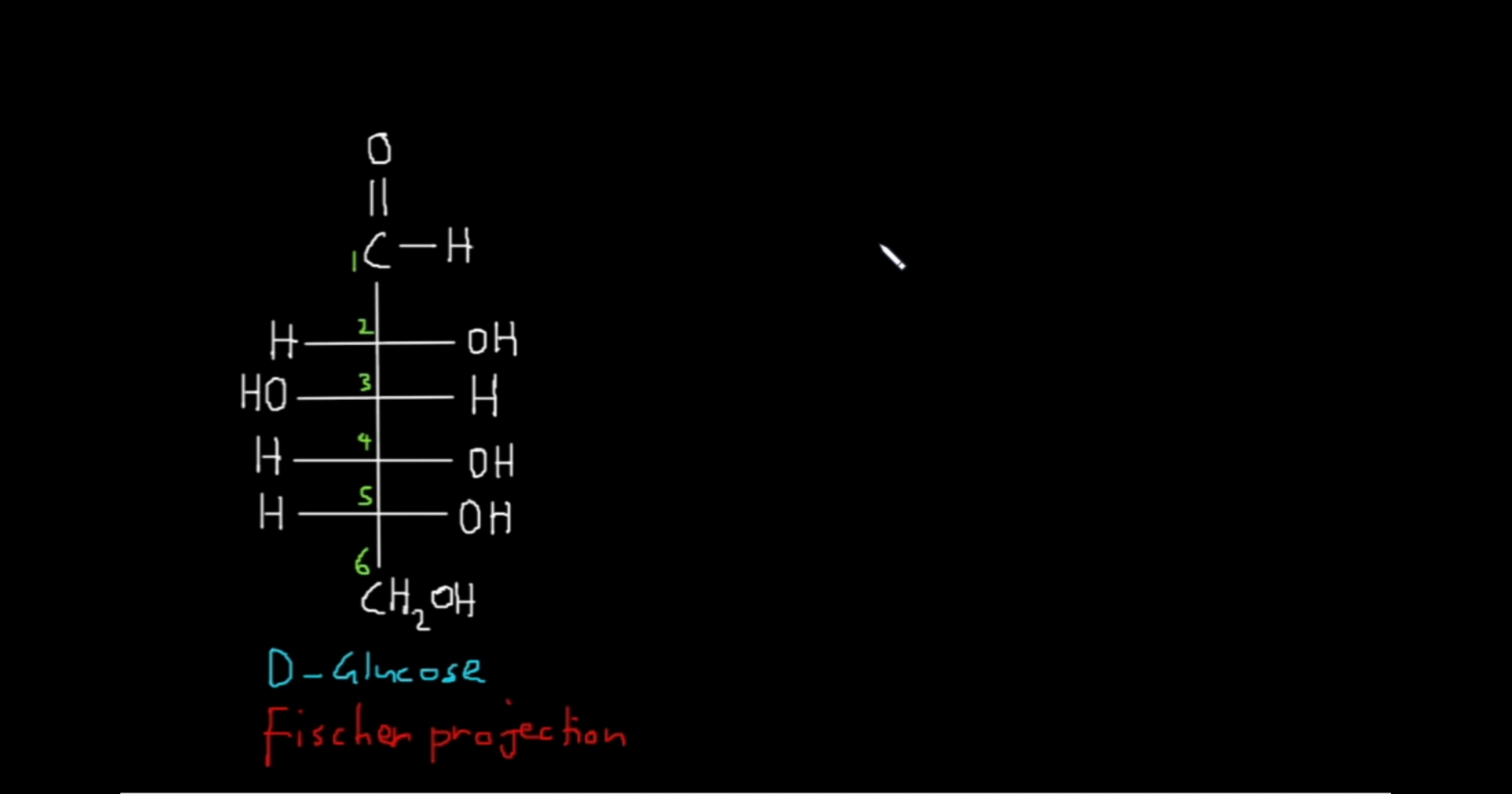In order to convert the straight chain structure to the cyclic structure, first we need to activate the aldehyde group that is present in this molecule. We can do that by placing this molecule in an acidic solution which contains a lot of H plus ions.